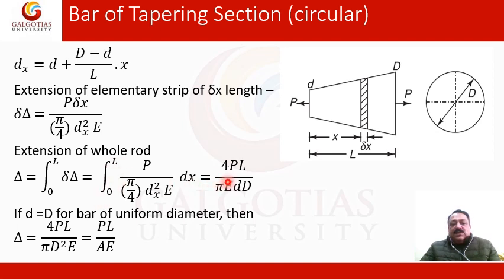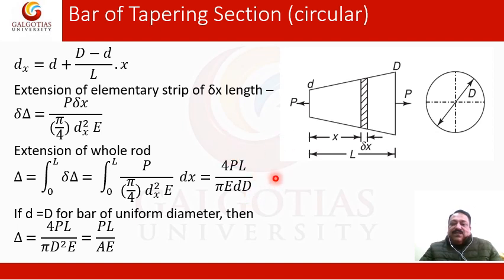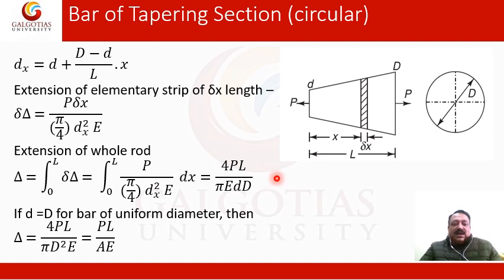After substituting limits, the total extension comes out as 4PL divided by (π·E·d·D), where small d and capital D are the diameters at the two ends. We can verify this formula: if small d equals capital D (uniform bar), the area becomes (π/4)d², and the expression reduces to PL/(AE), which matches what we studied in the last lecture. Hence we are confident that this derivation for the tapering section is also correct.